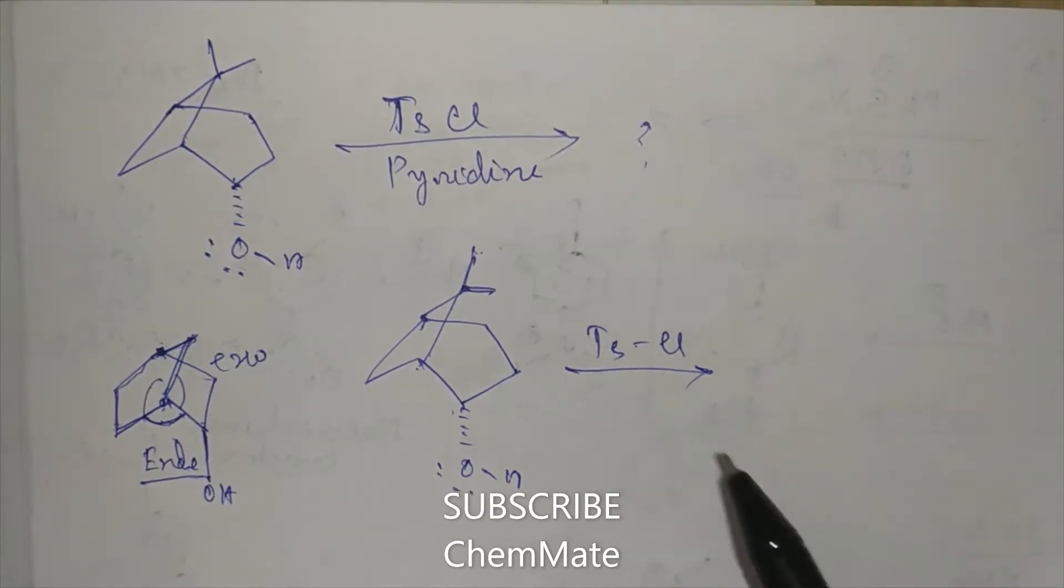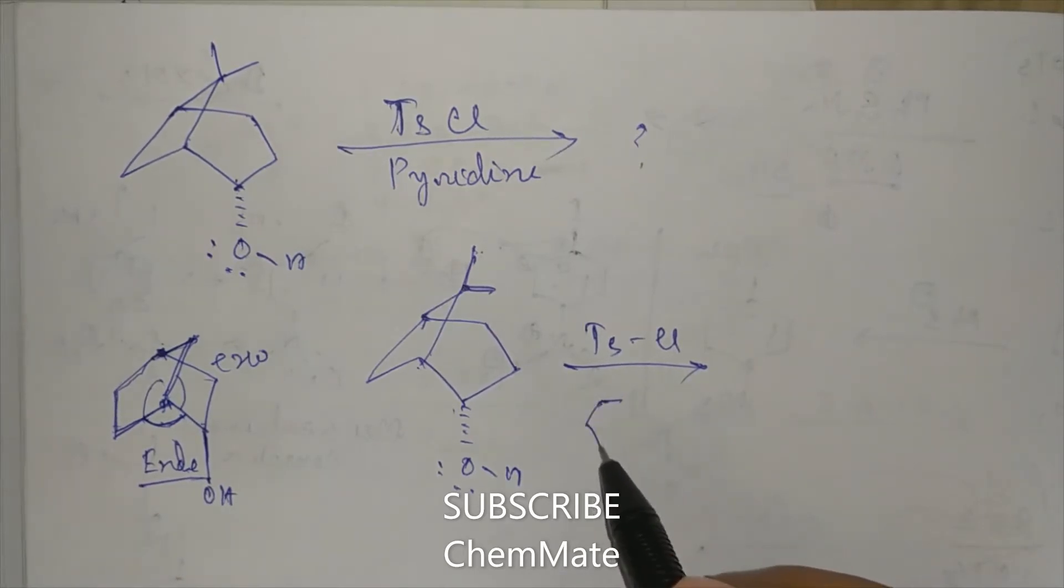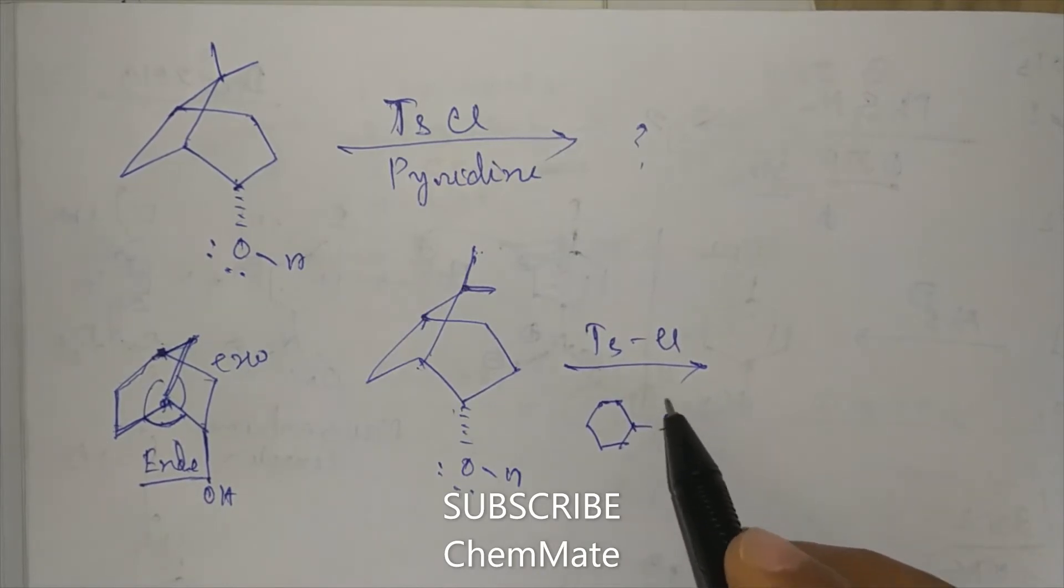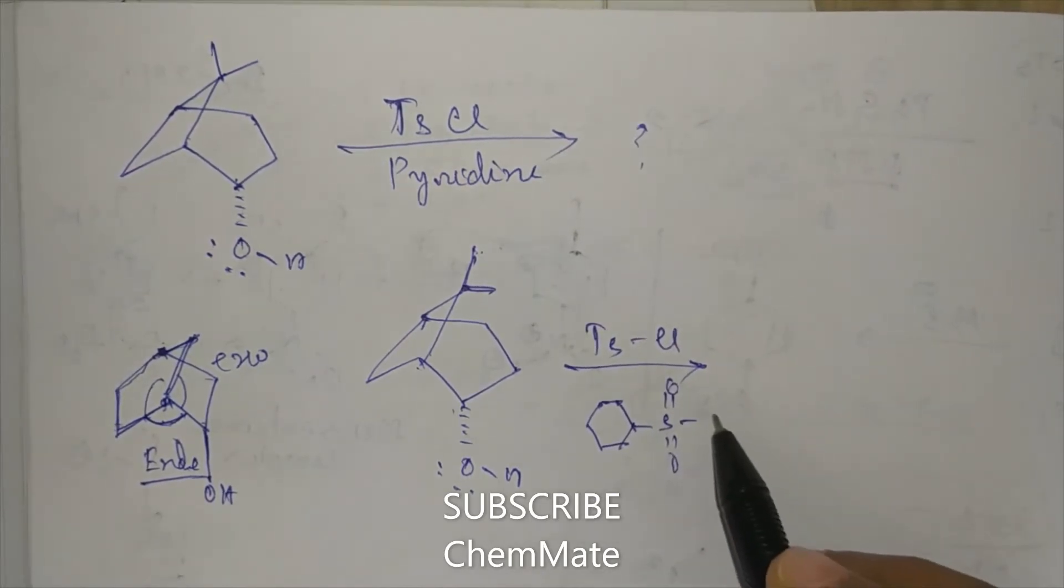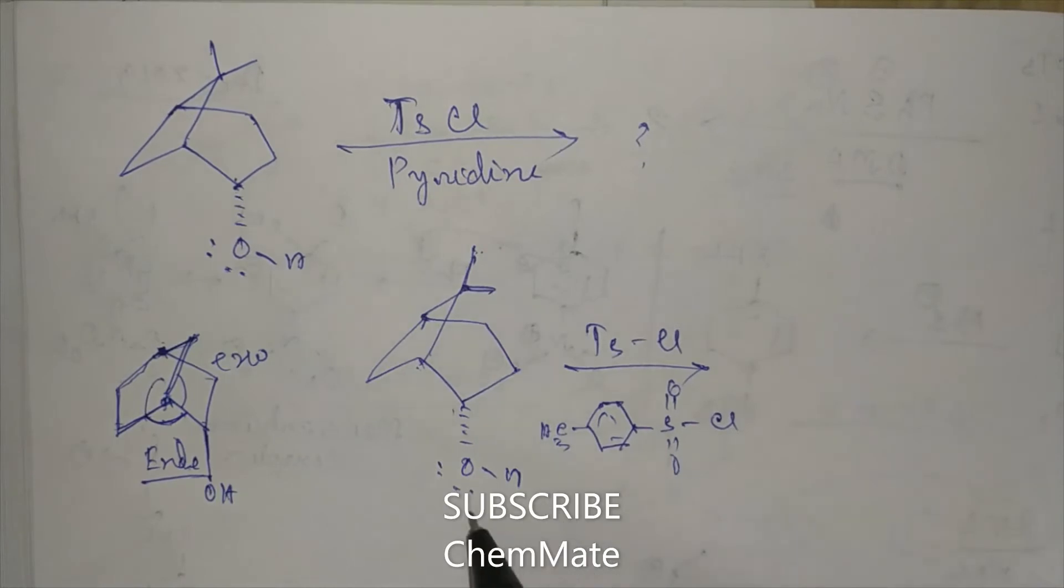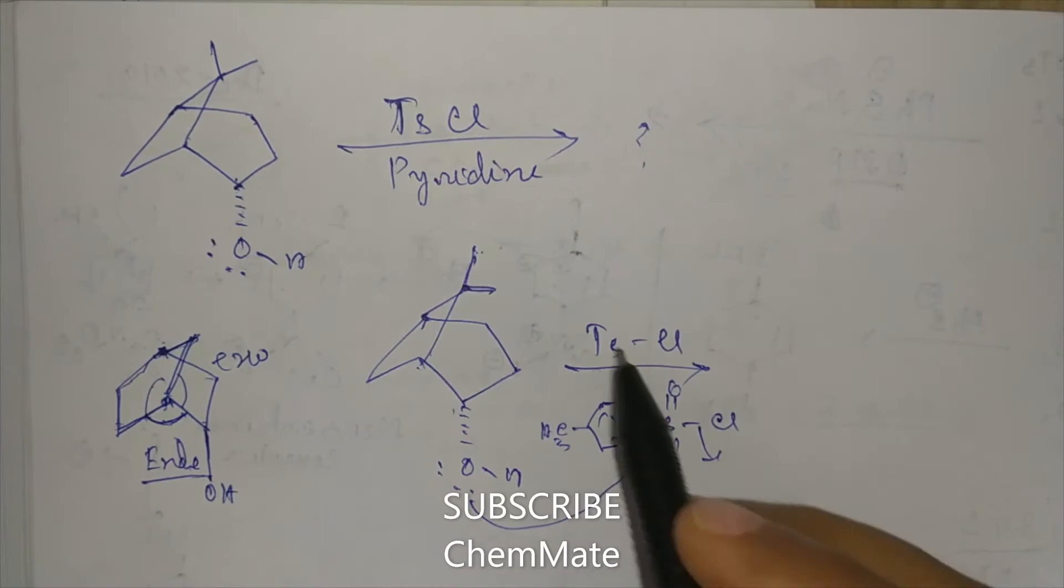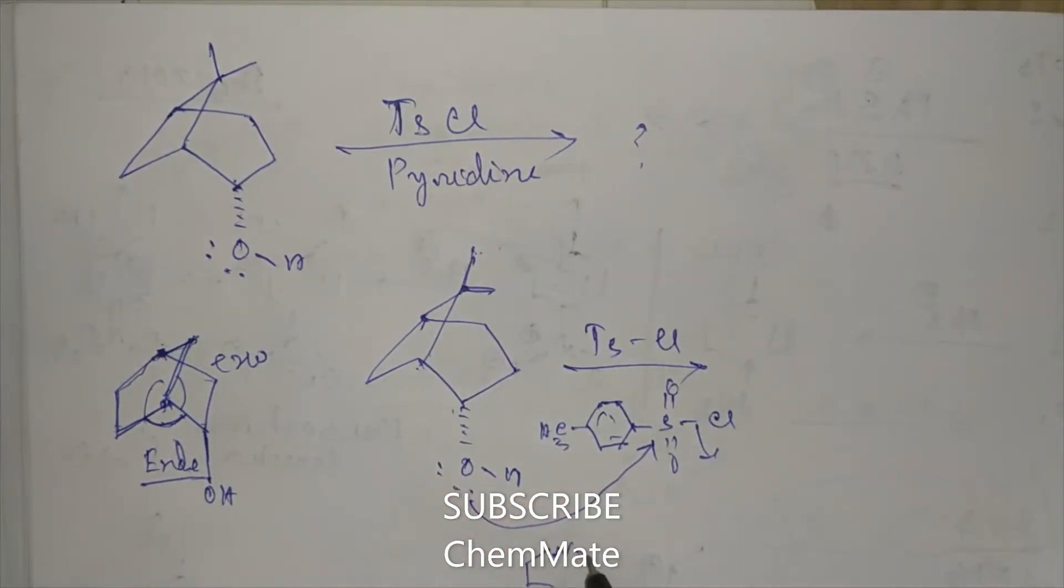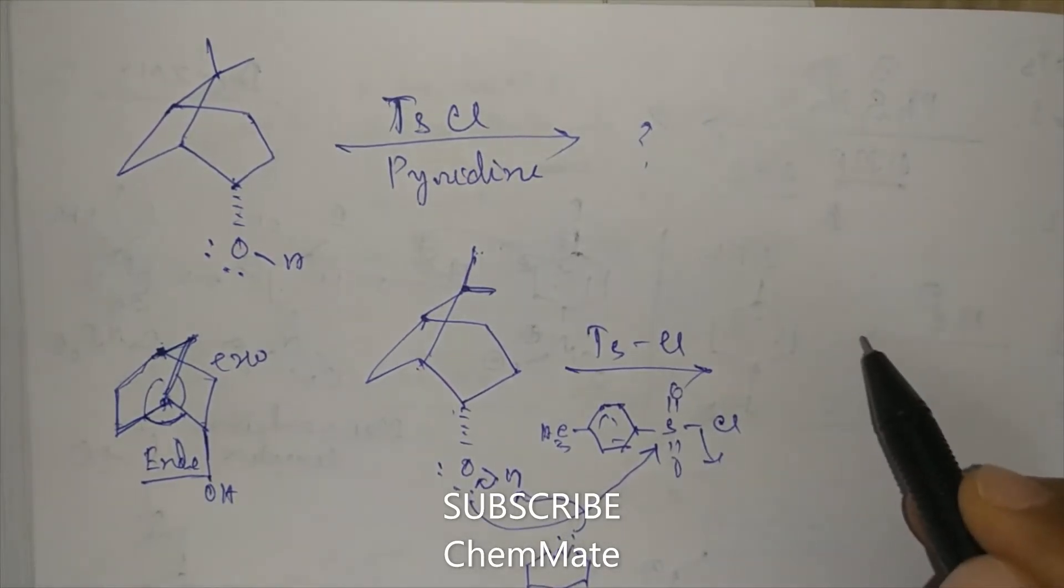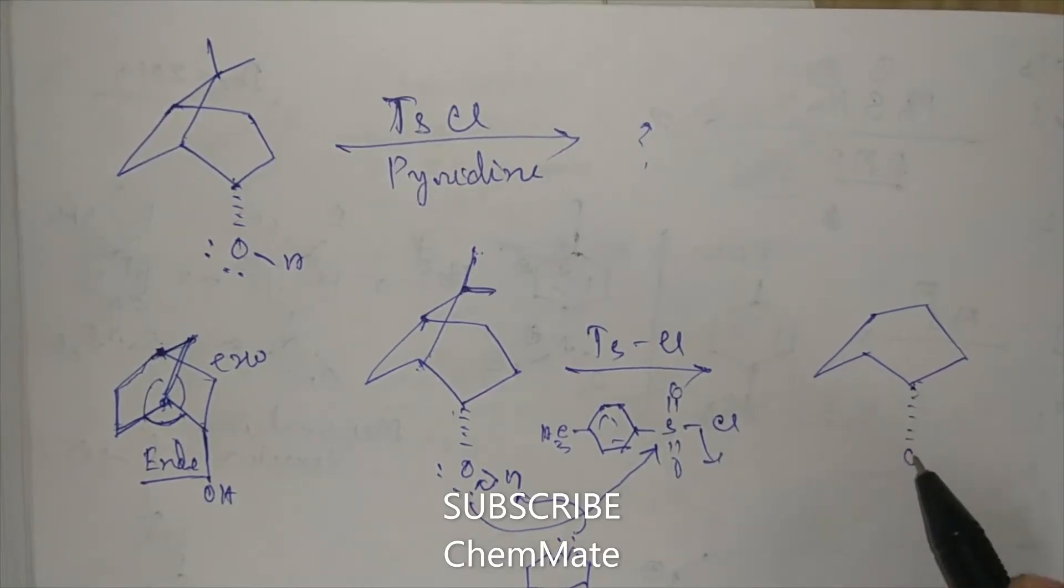Tosyl chloride is para-toluene sulfonyl chloride. It will attack into this sulfur when Cl will be removed, and pyridine will act as a base. It will abstract this hydrogen.